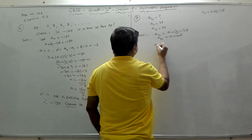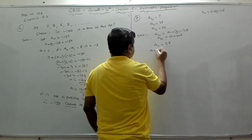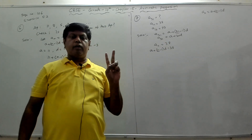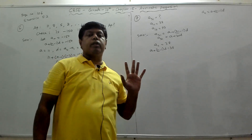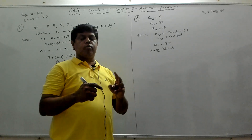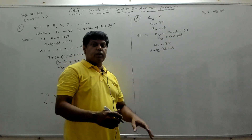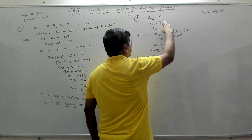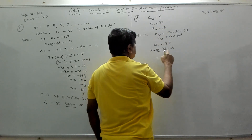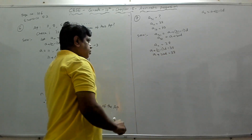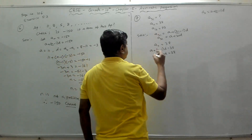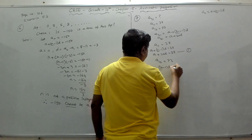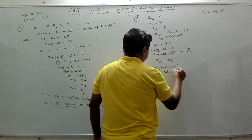From a11 = 38: a + (11−1)d = 38, so a + 10d = 38 — this is equation 1. From a16 = 73: a + (16−1)d = 73, so a + 15d = 73 — this is equation 2.